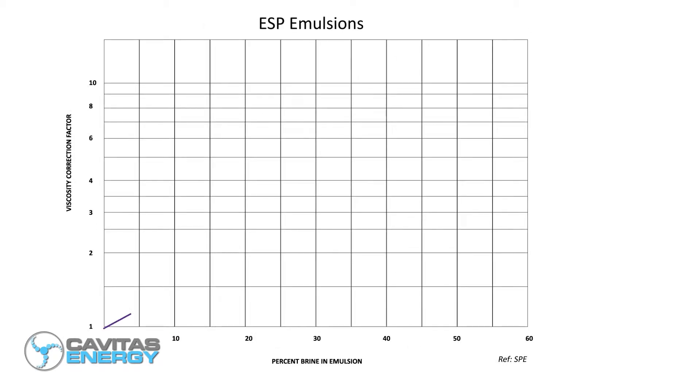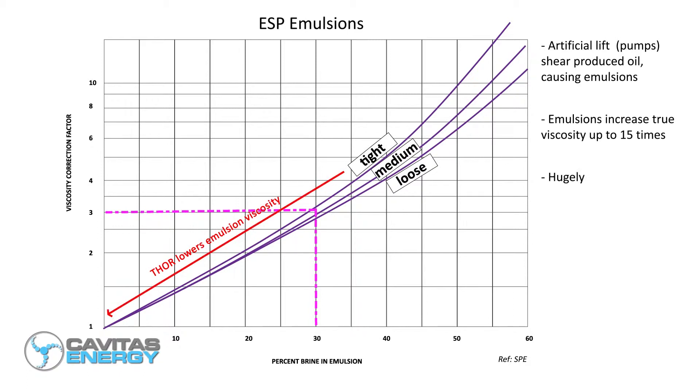Shearing from artificial lift causes emulsions, increasing produced oil true viscosity up to 15 times, causing significant issues especially with initial viscosities over 100 cp. THOR heating mitigates this, further improving pump efficiency and reducing frictional losses. THOR allows reservoir conditions to be maintained, improving flow assurance by eliminating wax and asphaltene deposition.